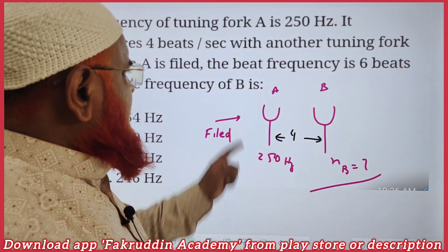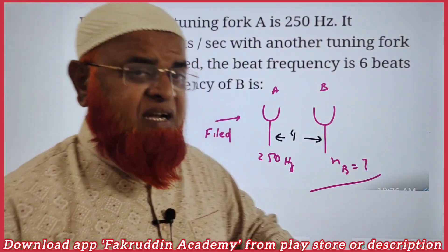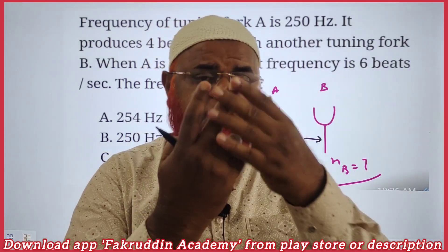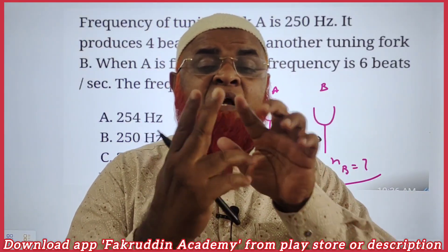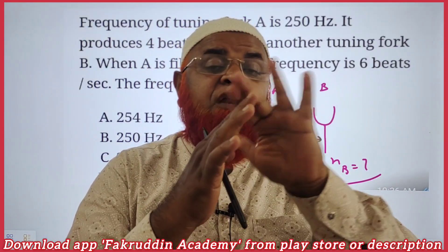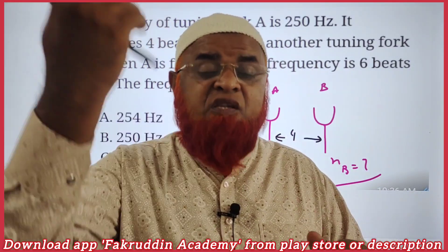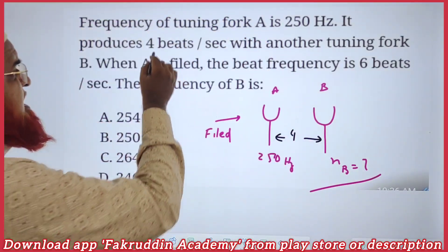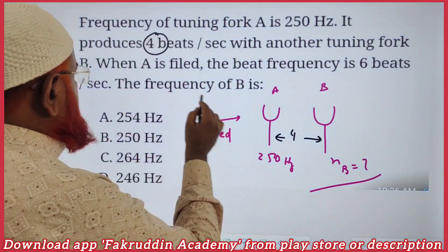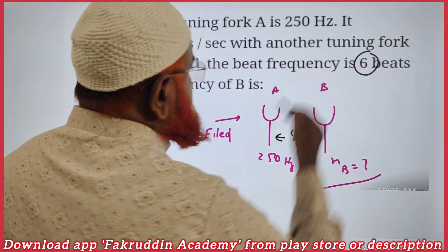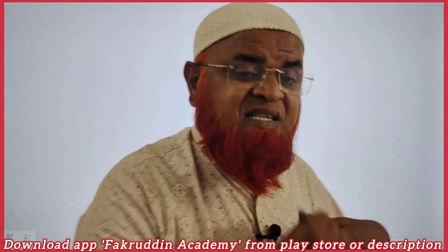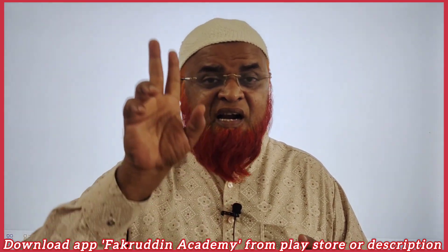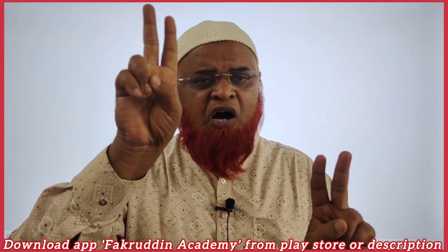It is said that when tuning fork A is filed — filing means rubbing it with sandpaper — its frequency increases. When you file A, the frequency increases and the number of beats goes from four beats to six beats. From this, it is concluded that A is already larger and B is smaller.